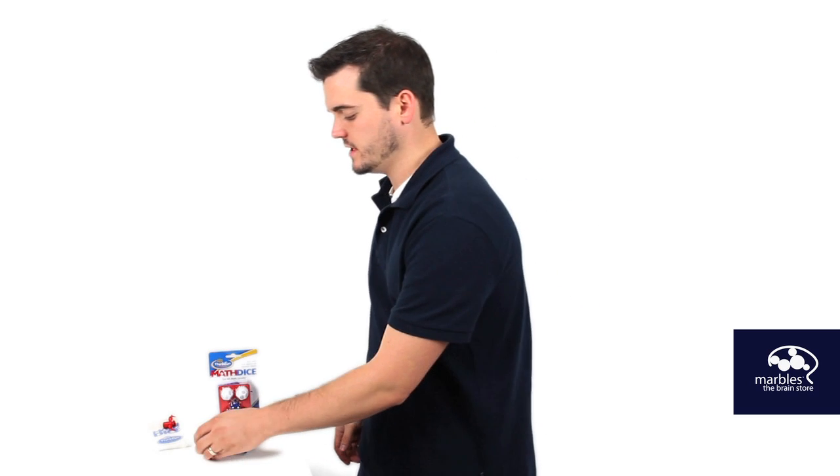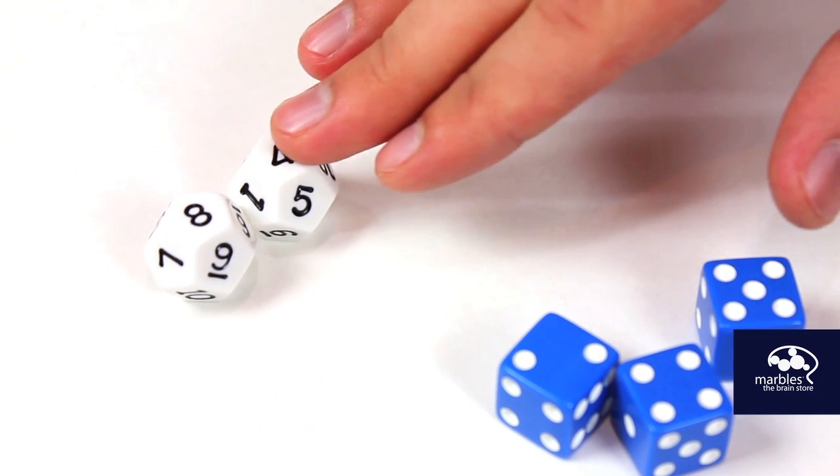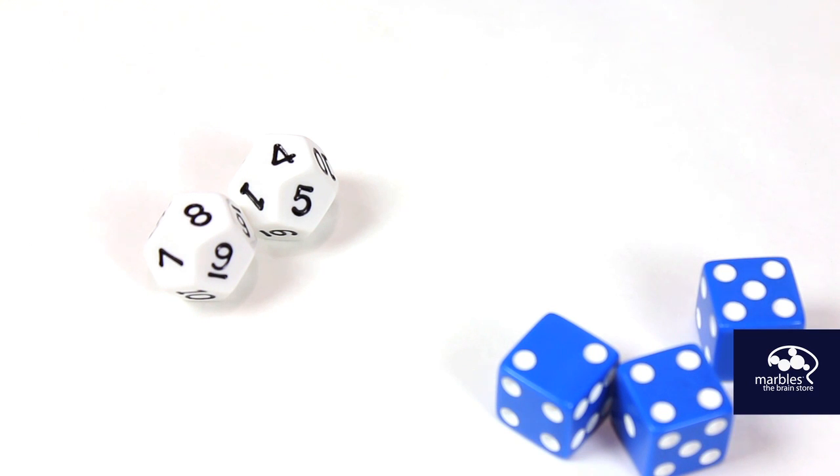You take these two white 12-sided die and you're going to roll those to get your target number. So we rolled an 8 and a 4, so we're going to multiply 8 times 4 which equals 32.